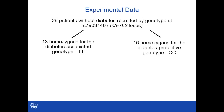To do so, we used an experimental paradigm we have used before, where we recruited by genotype at RS7903146 — homozygotes for the diabetes-associated genotype, TT, and homozygotes for the diabetes-protective genotype, CC. Each group would otherwise be matched for fasting glucose concentrations, age, weight, and sex.